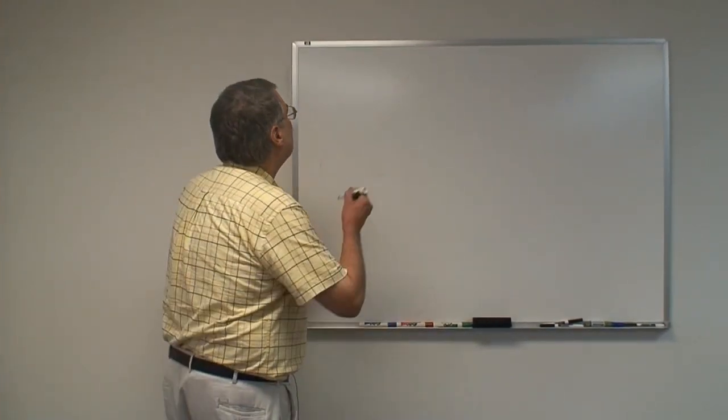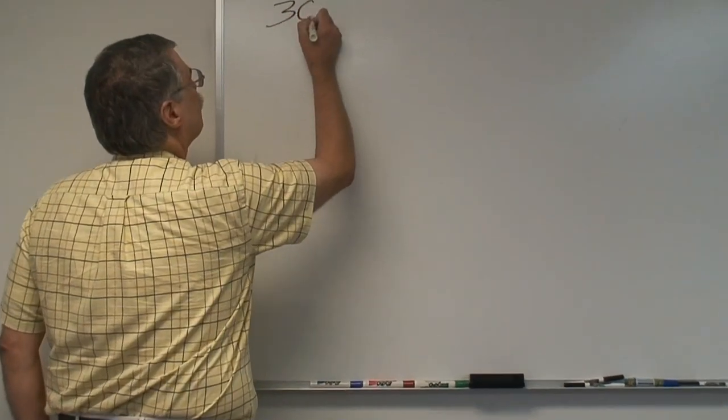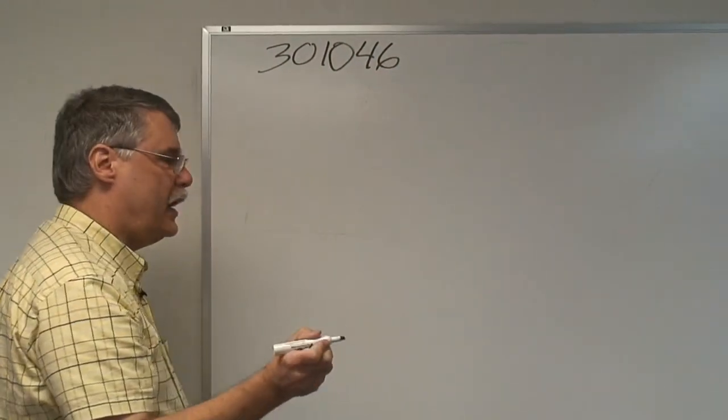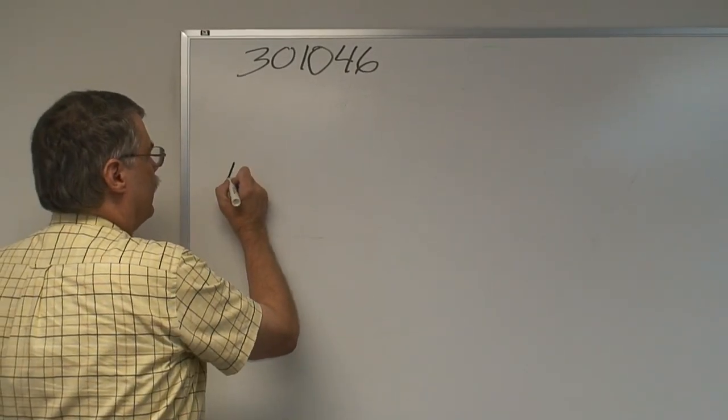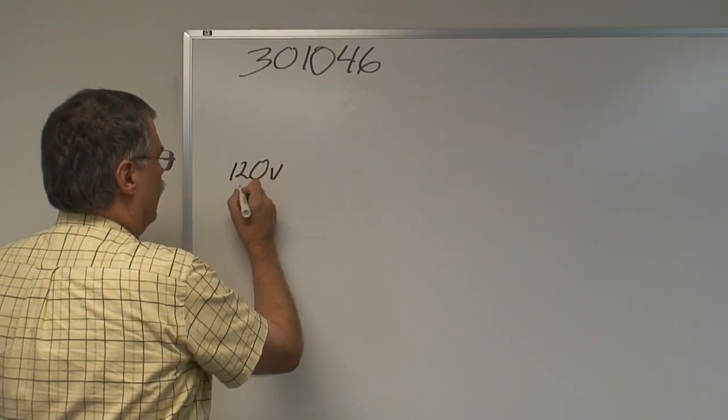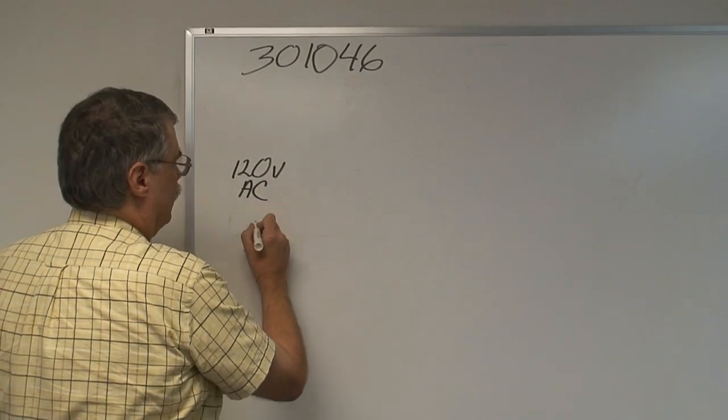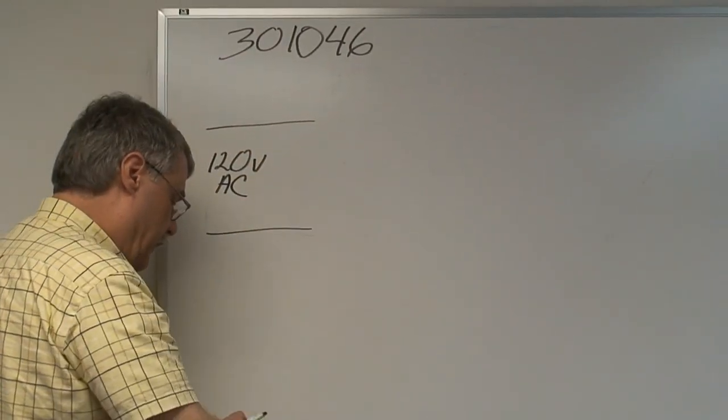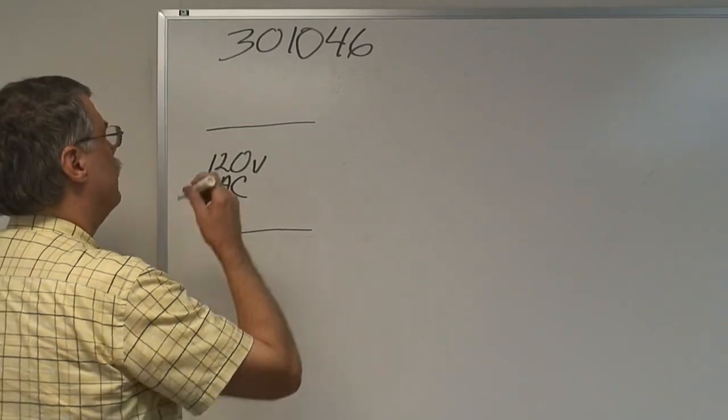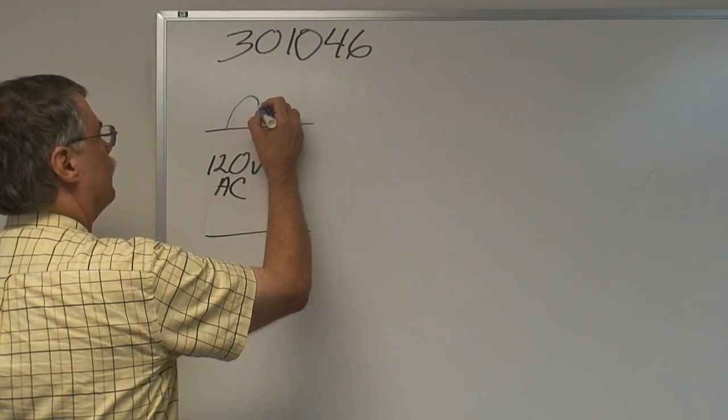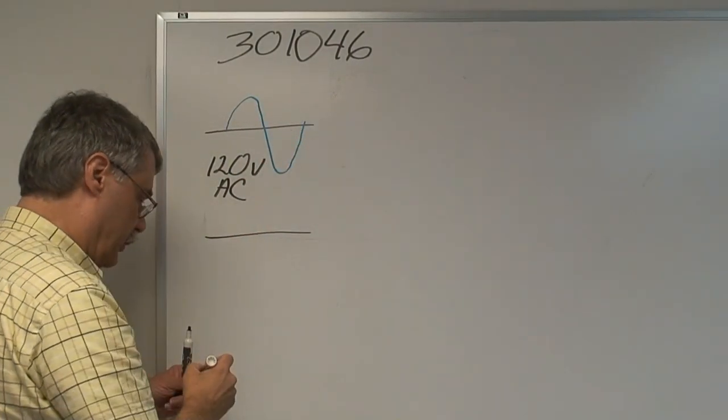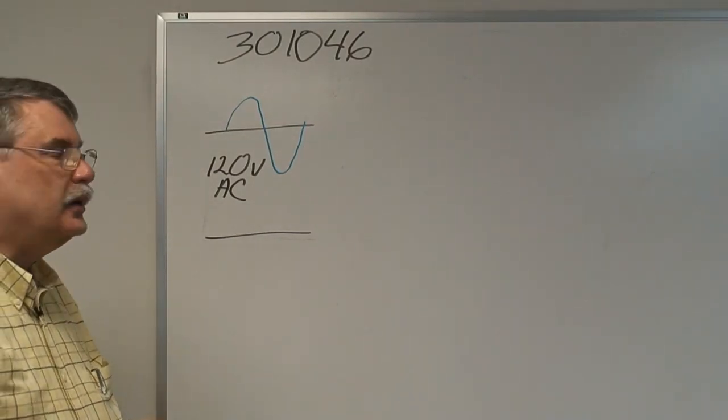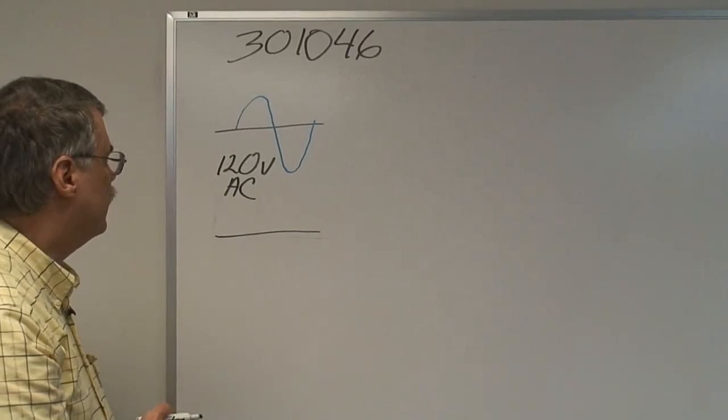The 3010-46 starts with the power line. So we have 120 volts AC, two lines here. The power line has a sine wave of voltage that is 120 volts. Here in the United States it's 60 cycles. In Europe it's 50 cycles.